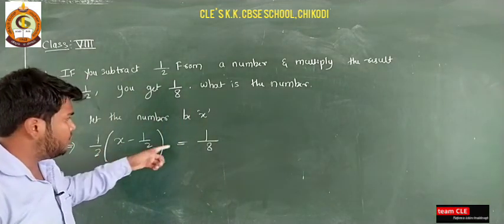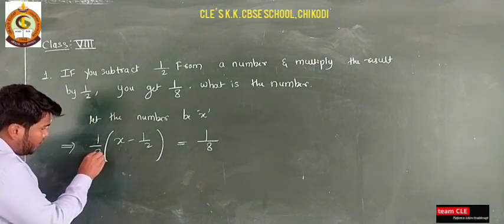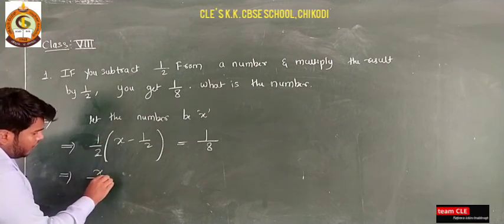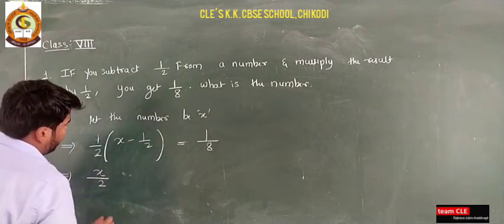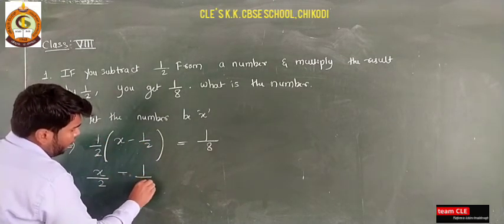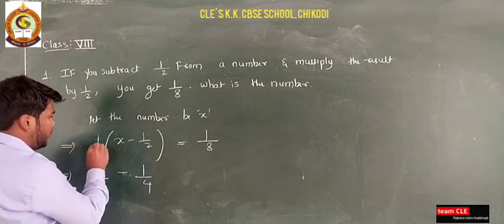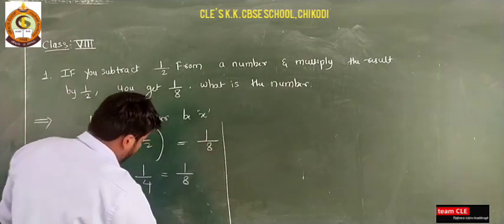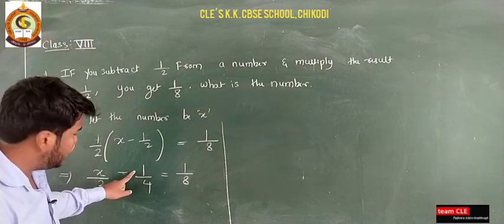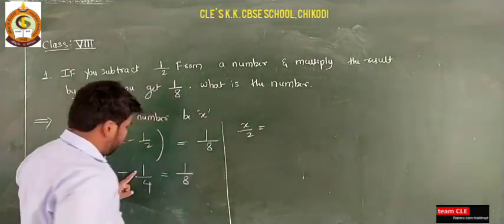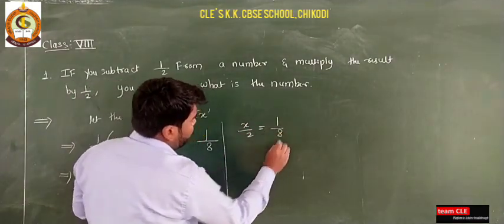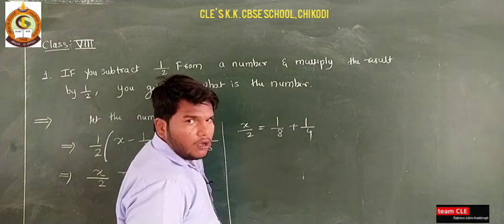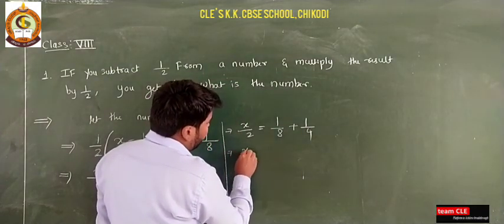So we have (1/2)(x − 1/2) = 1/8. Multiplying 1/2 into the bracket: (1/2)x = x/2, and (1/2)(1/2) = 1/4. So we get x/2 − 1/4 = 1/8. Now transfer −1/4 to the RHS: x/2 = 1/8 + 1/4.